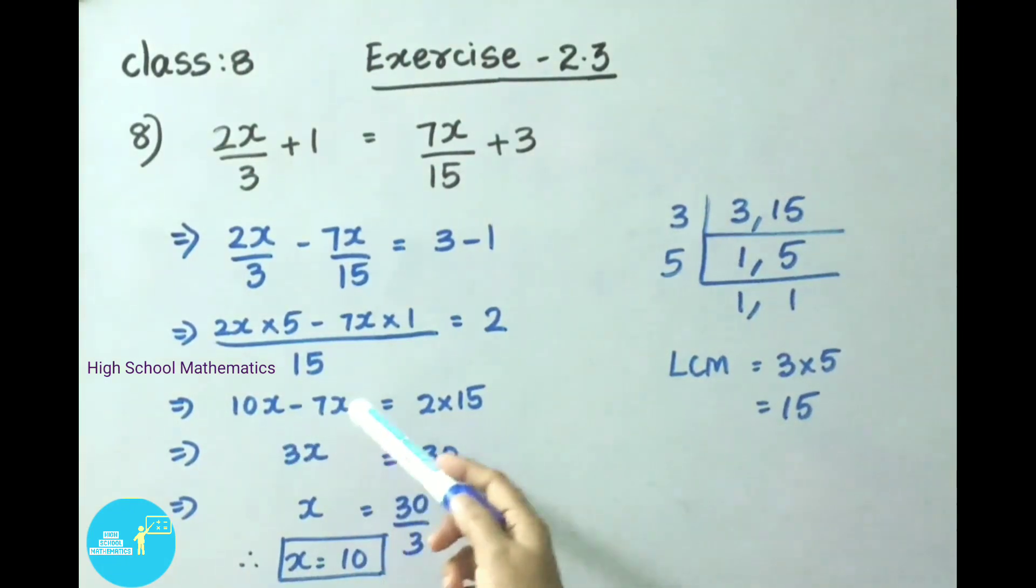Now 10x minus 7x is 3x, that equals 2 15's are 30. That implies x equals 30 by 3. Here 3 is multiplying, on transposing it becomes divided by. Now 3 table 10 times is 30. So x value we got here 10.